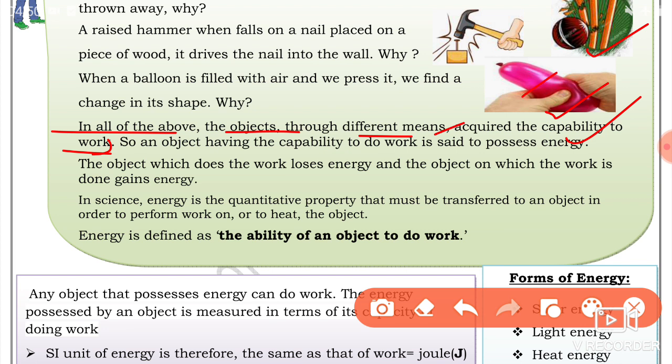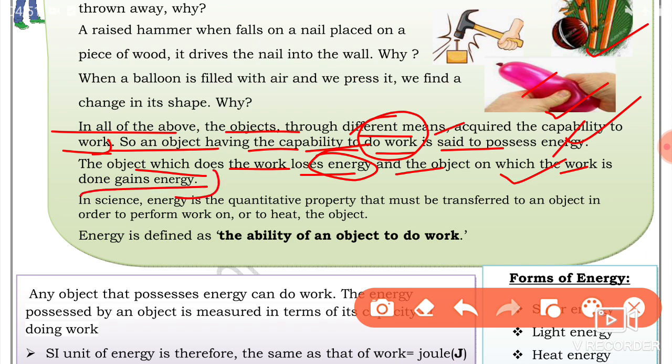In all of the above, the objects through different means acquired the capability to work. So an object having capability to work possesses energy. The object which does the work loses energy and the object on which the work is done gains energy.